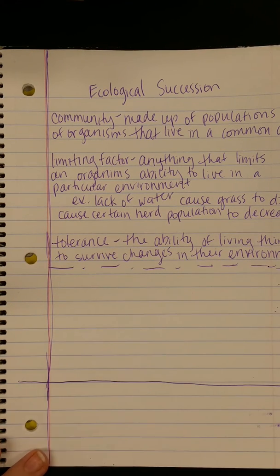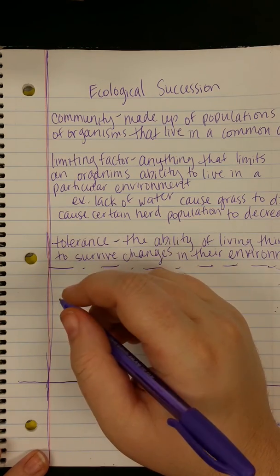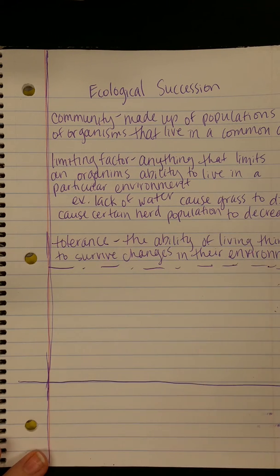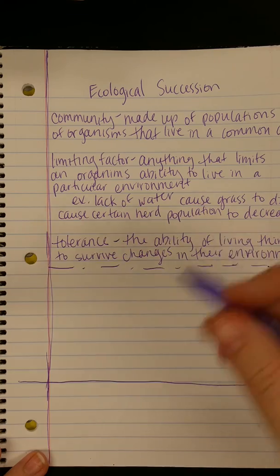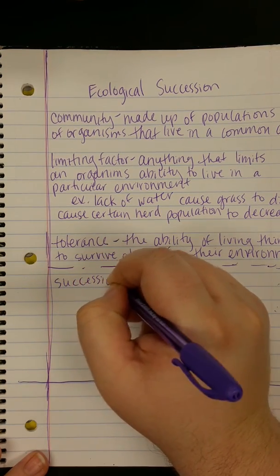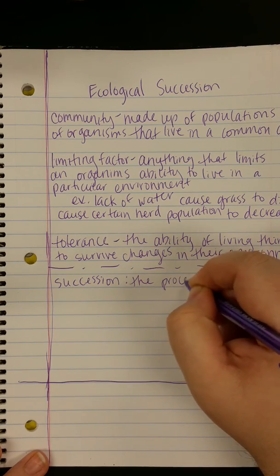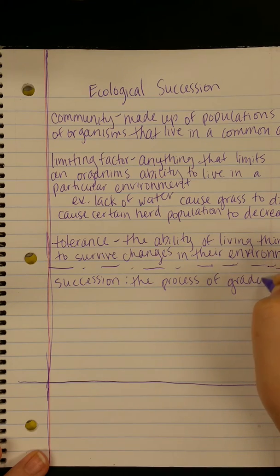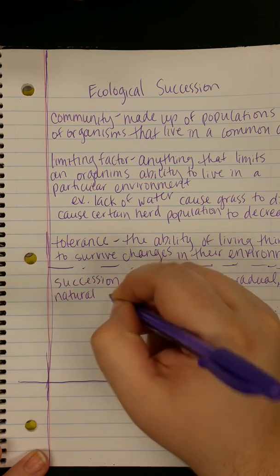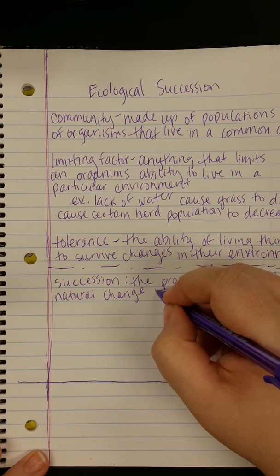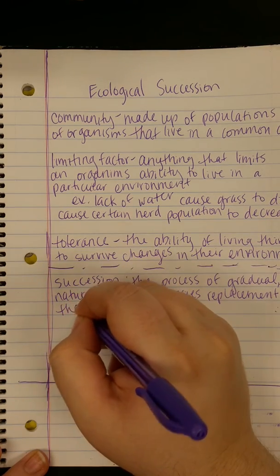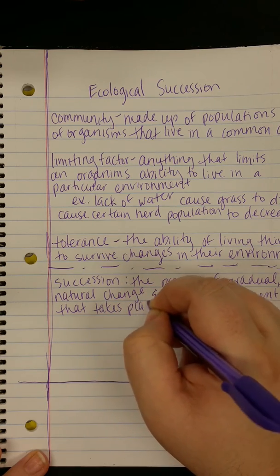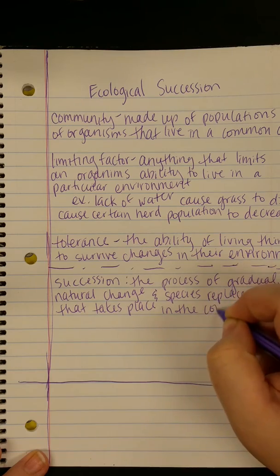Now we're going to talk about succession. If you're talking about kings and queens, succession would be the first person crowned king, then they die, and their son succeeds them, or whoever goes after them. Things happen in an order. In biology, succession is the process of gradual natural change and species replacement that takes place in the communities of an ecosystem over time.